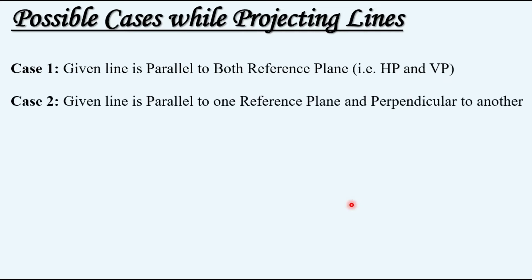In the previous video we discussed the possible cases while projecting lines. There are four possible cases. Case number one: given line is parallel to both reference planes. Case number two: given line is parallel to one reference plane and perpendicular to another.